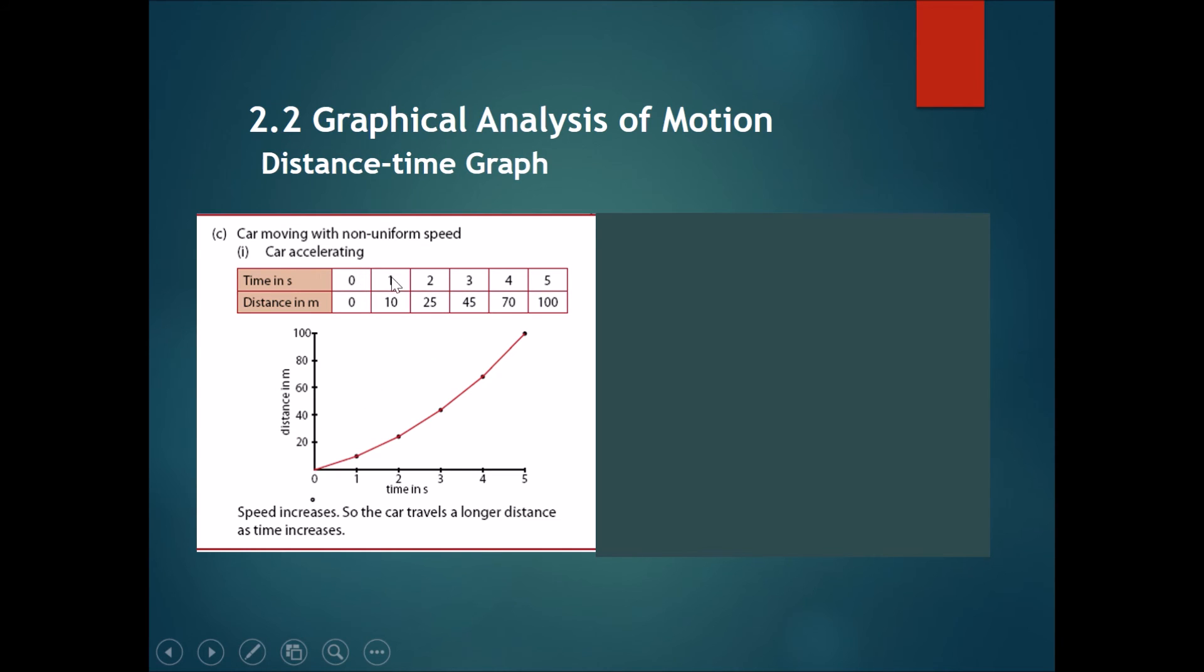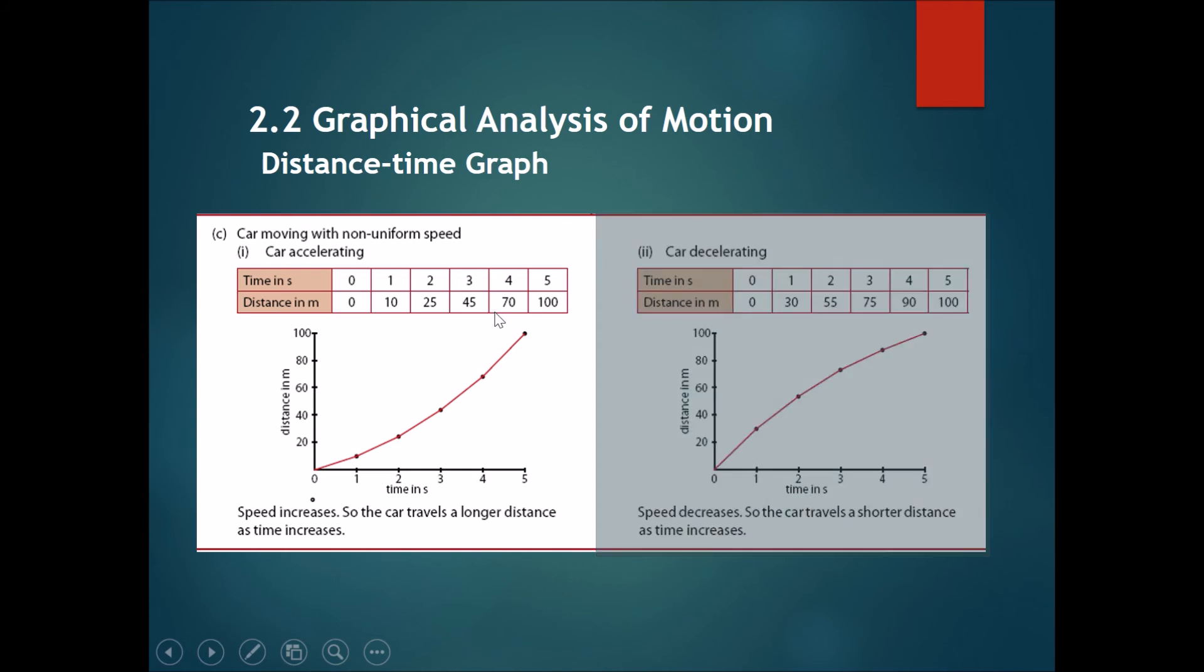So when there is acceleration, we should also look at deceleration. When a car is decelerating, at first it is going at a fast speed where it is covering a lot of distance per time. However, it covers less and less distance per time as time passes. So over here you can see that here there's 30 meters covered per second. In the next second, it only covers 25 meters, and the distance drops per second. So when you plot the graph, you can see that it actually forms this shape. It would curve downwards instead.